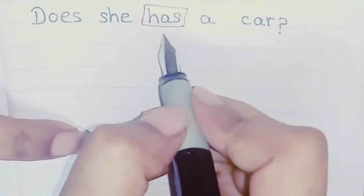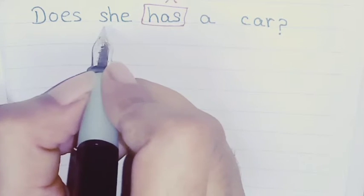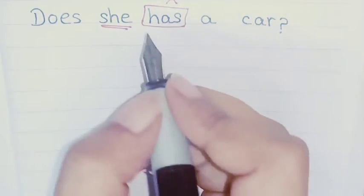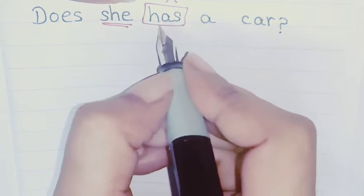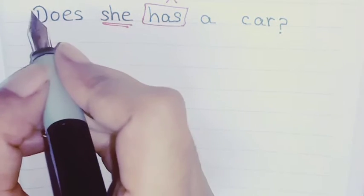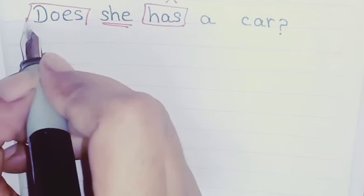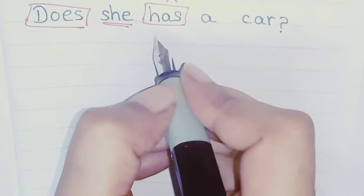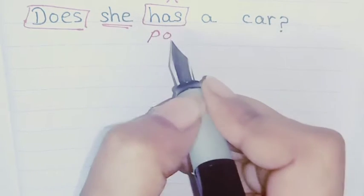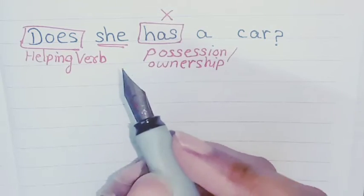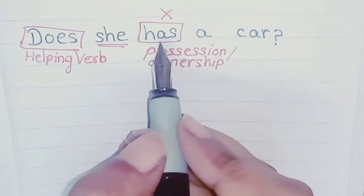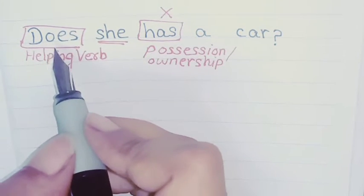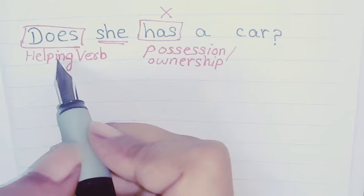In this sentence has is wrong. While normally has is used with singular pronouns. Now she is pronoun so we should use has but actually has is not used as a helping verb over here. Here in this sentence does is helping verb. Has is used for showing possession. So here has is used for possession ownership. It's not used as a helping verb. Whereas in this sentence does is used as a helping verb.